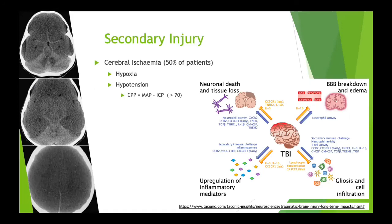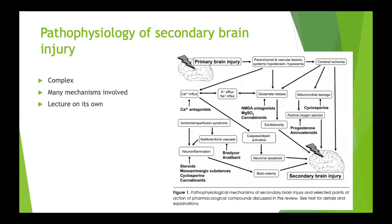Secondary injury mechanisms include neuronal death and tissue loss in areas of ischemia or hypoxia, loss of autoregulation, blood-brain barrier breakdown with secondary swelling and edema, and a vicious cycle where gliosis occurs - the process by which the brain tries to heal. Because brain cells can't regenerate themselves for the most part, the brain heals by scarring, which we call gliosis. There's also upregulation of inflammatory mediators during the acute phase. The pathophysiology of secondary brain injury is very complex, not fully understood, with ongoing research including microdialysis looking at cellular damage markers.